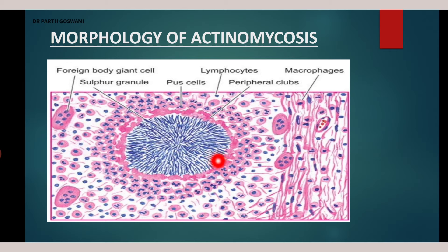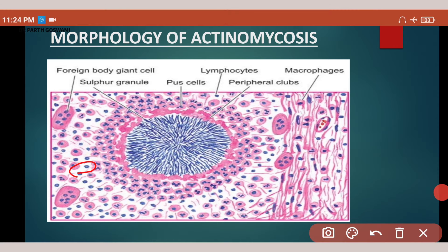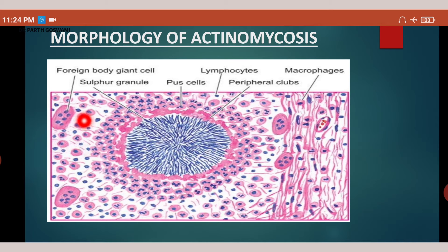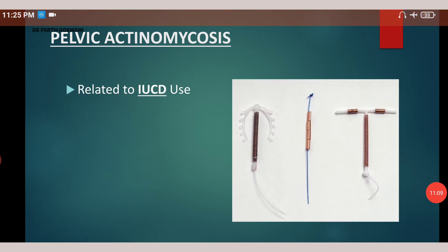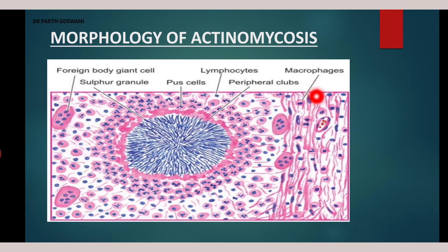In the periphery of the lesion, you will have chronic inflammatory cells — lymphocytes (small cells with scanty cytoplasm) and plasma cells, in which the nucleus is pushed to the periphery. Additionally, macrophages are activated and form giant cells — multinucleated cells — which is the most important finding. The outermost rim is formed by fibrosis.